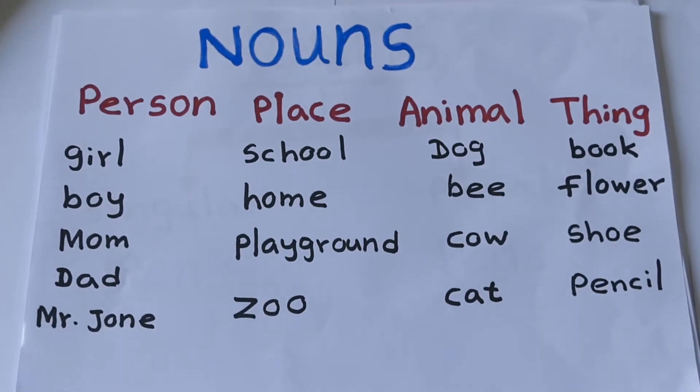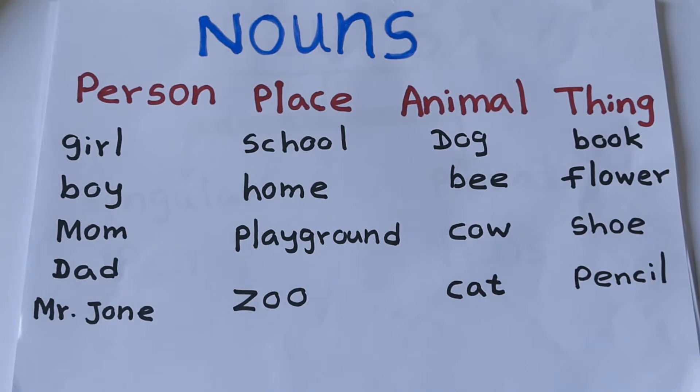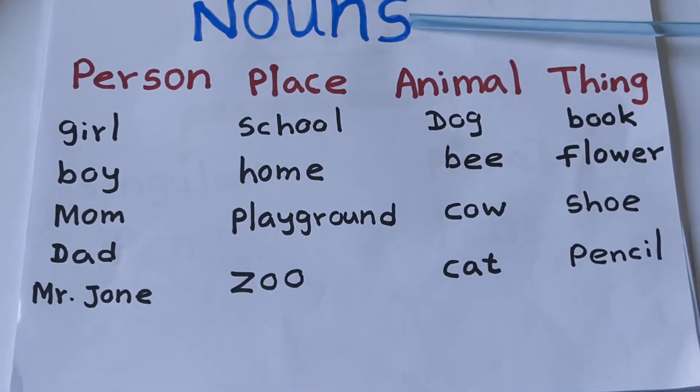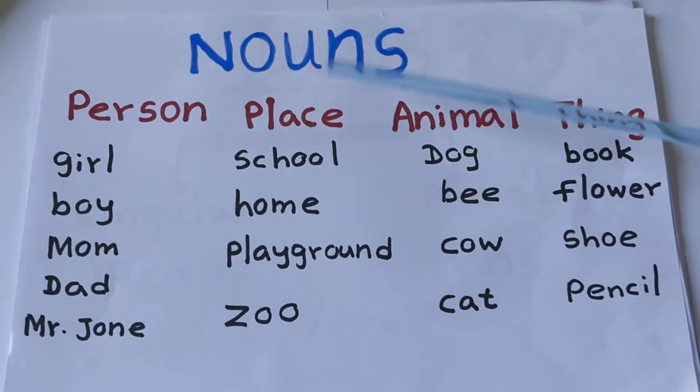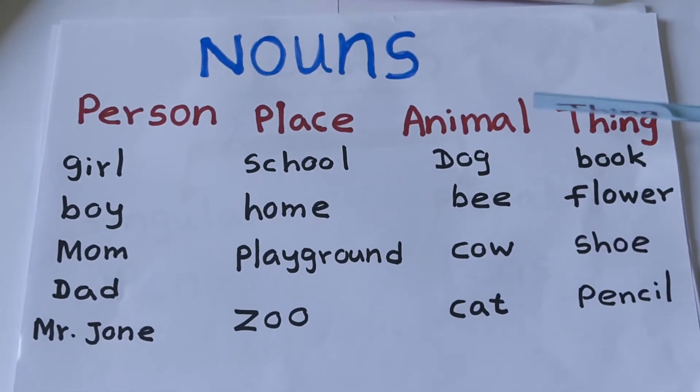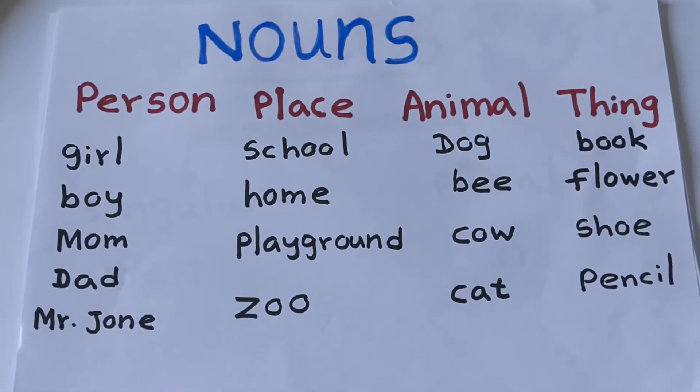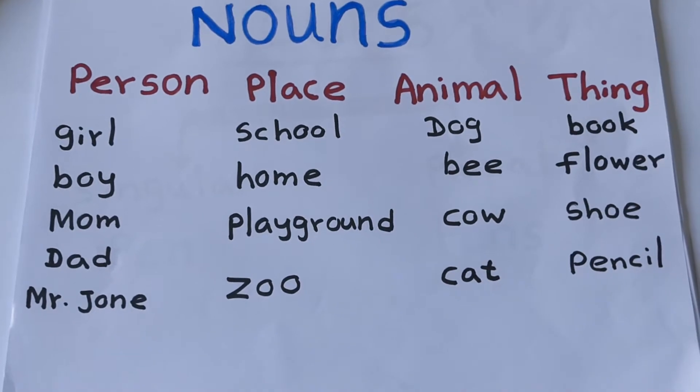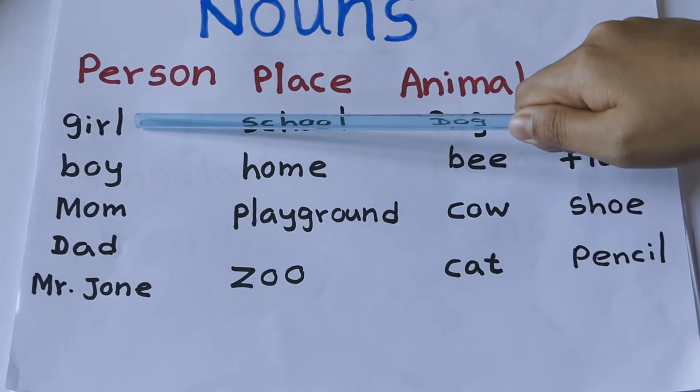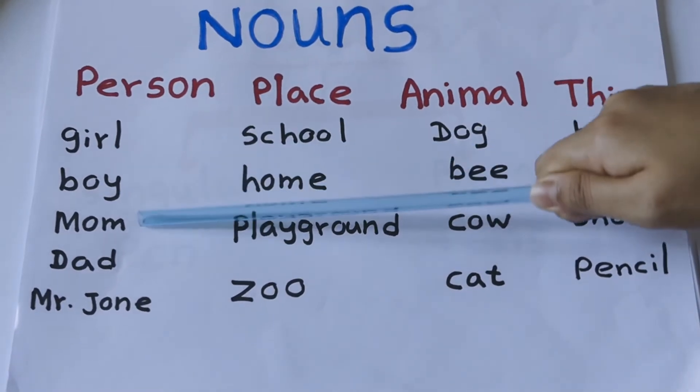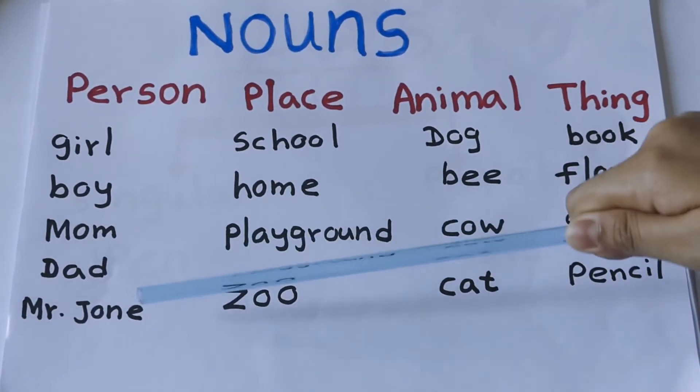Welcome to Buddy Kids First. Today I teach you nouns. Nouns can be a person, a place, an animal, or a thing. What are the examples of person? Girl, boy, mom, dad, Mr. John. Like any other name can be a noun.